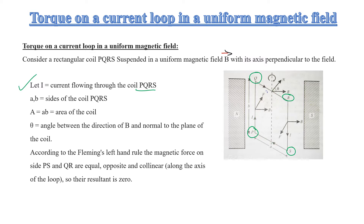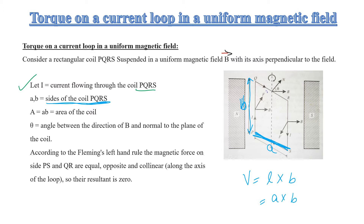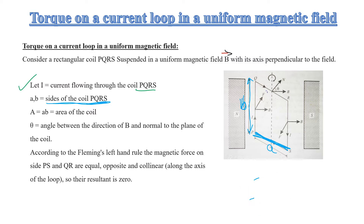What is small a and small b? In the diagram, I will consider one length as a and the other length as b. So a and b are the lengths or sides of the coil PQRS. The area equals length into breadth, so length is a and breadth is b. This means the total area of the coil is A = a × b.